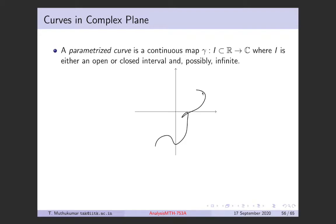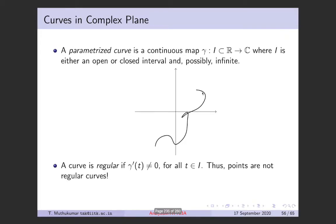Gamma is called the parameterization of the curve. A regular curve is one where gamma prime of t is nonzero for all t. Think of a particle traversing the curve — the velocity of the particle is never zero. This assumption is very useful: even to talk about the length of a curve you assume this is nonzero, and it ensures the tangent vector transitions smoothly along the curve.